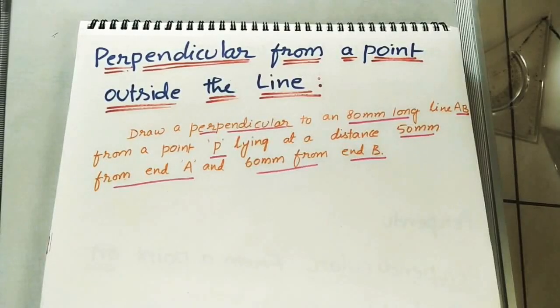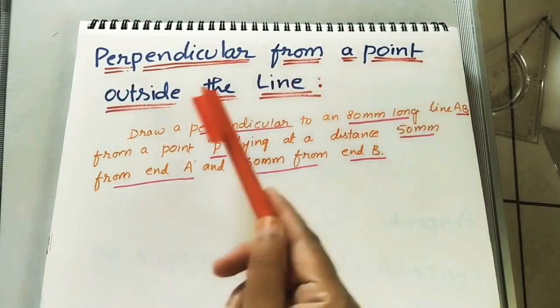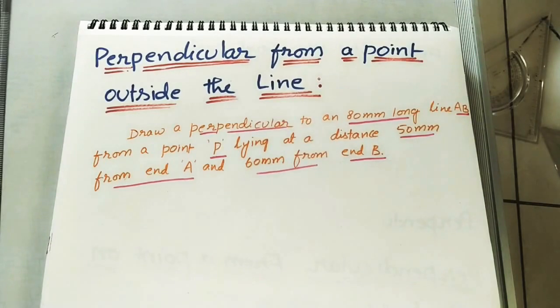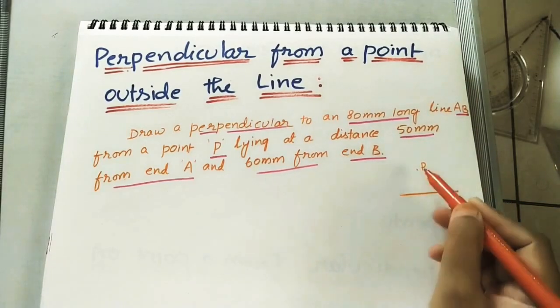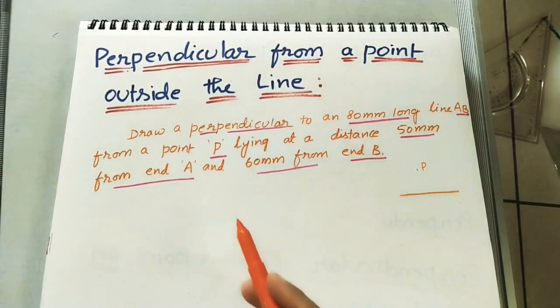Let us discuss how to draw the perpendicular from a point outside the line. So line will be given. We need to draw the perpendicular line from one P point. This P point is outside the line. And what are the methods we have, we will discuss in today's class.